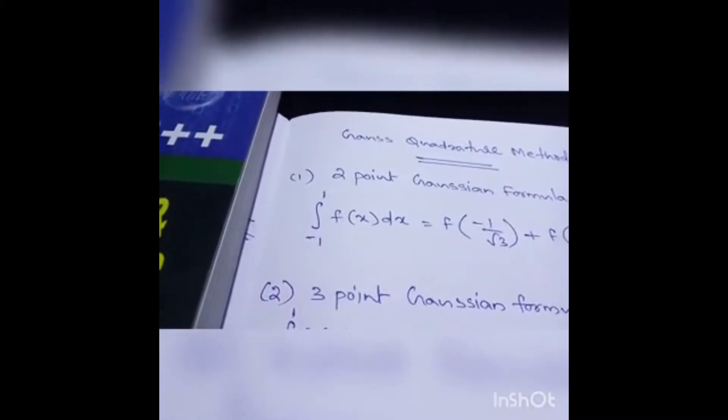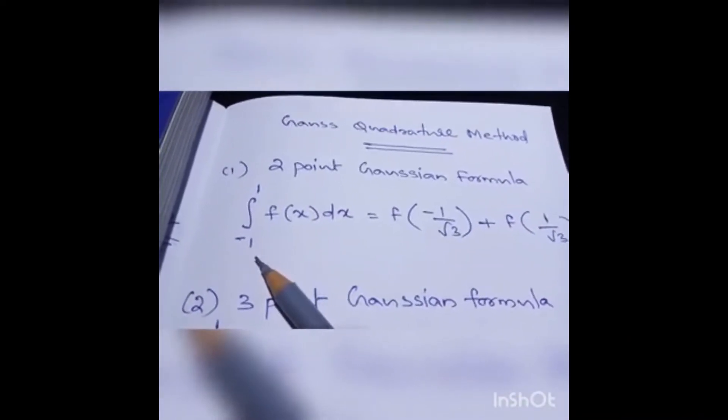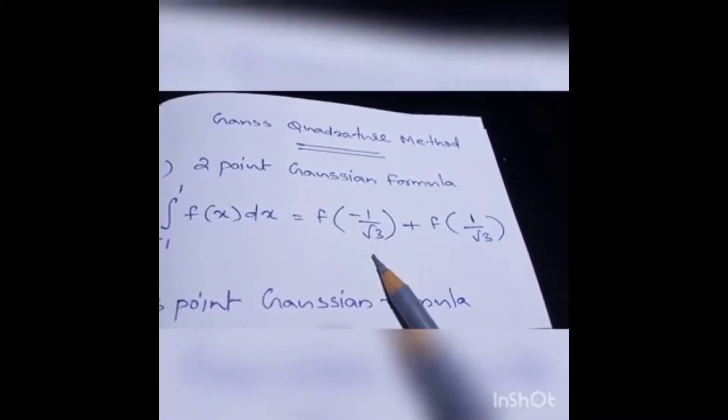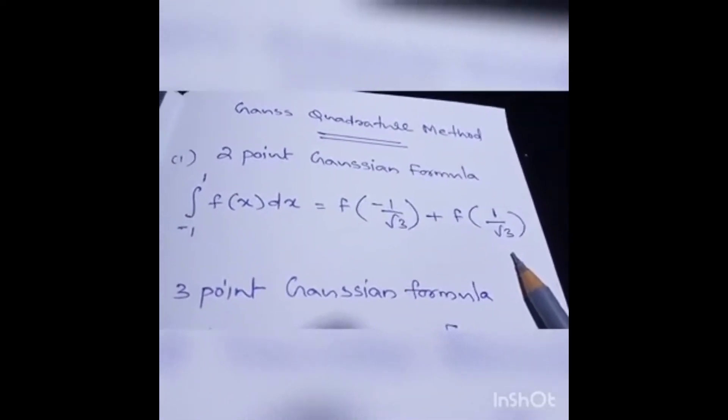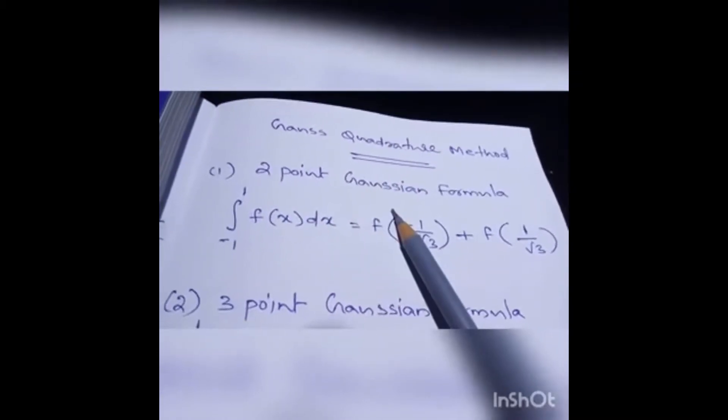There are two methods in the Gauss quadrature technique. The first one is the two-point Gaussian formula. The formula is: the integration of minus 1 to 1 of f(x) dx is equal to f(minus 1 over square root of 3) plus f(1 over square root of 3). That is the formula for the two-point Gaussian equation.